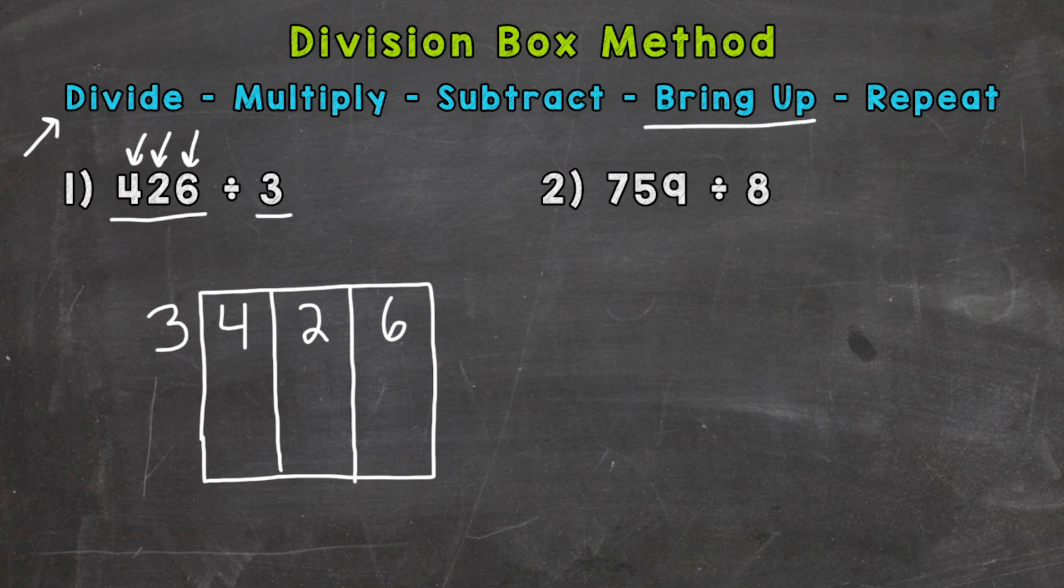So let's start with divide and we divide 4 by 3. So this 4 divided by 3. How many whole groups of 3 can we pull out of that 4? Well 1. Now we multiply. 1 times 3 is 3. Subtract. 4 minus 3 is 1. Now we bring that 1 up. So we have 12.